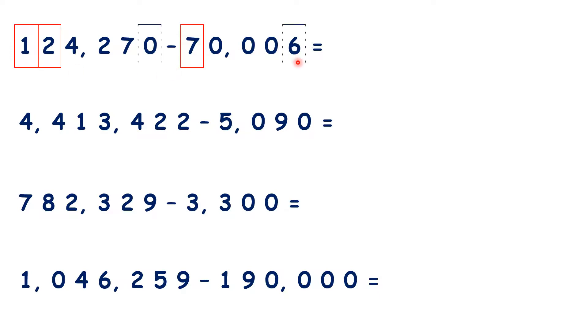And we're also subtracting 6 units, but because we start with 0 units, our tens digits will change as well. So our answer is 54,264, because we subtracted 7 from 12 to get 5, and we subtracted 6 from 70 to get 64.